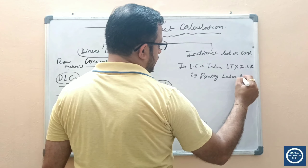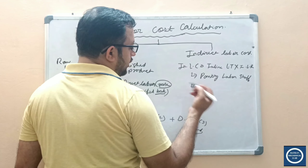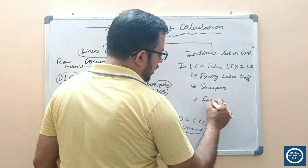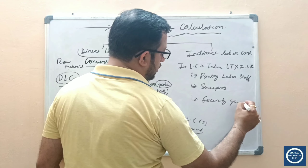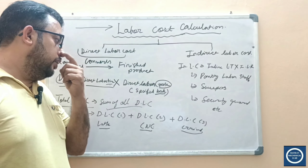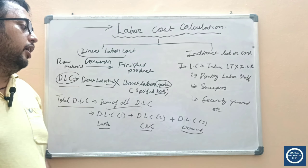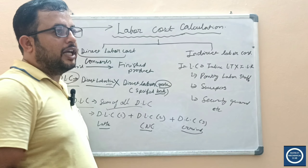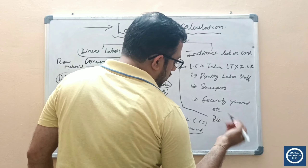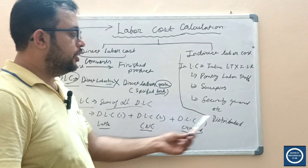Examples of indirect labor include pantry staff who cook food for all other workers, janitorial staff or sweepers who keep the floor clean, and security guards. These workers cannot be assigned to a specific product line — they serve the entire plant. Therefore, there is a distribution mechanism by which indirect labor cost is distributed across all products being manufactured in a specific plant.